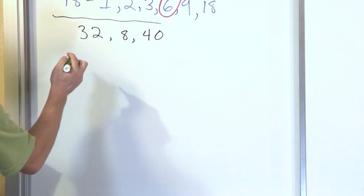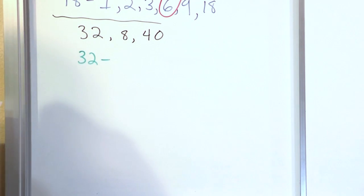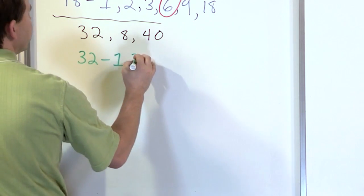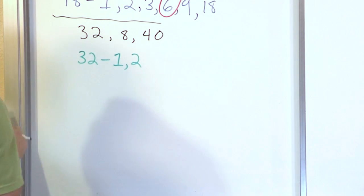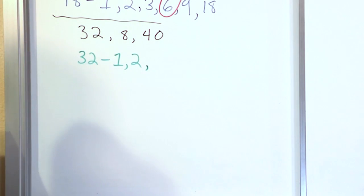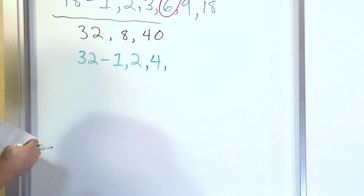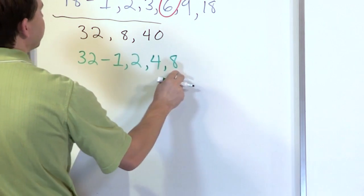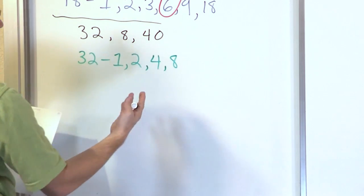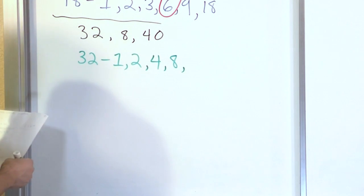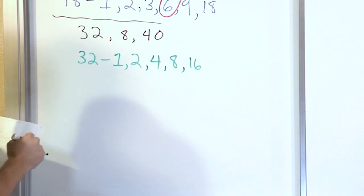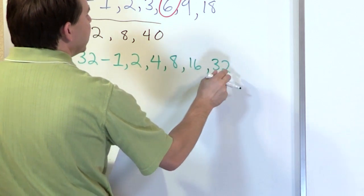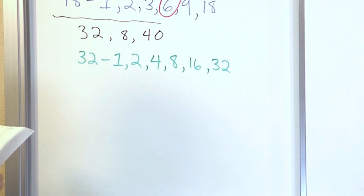Let's list the factors of the number 32. The number 1 is always a factor. The number 2 is a factor because 2 times 16 is 32 — you can also tell it's divisible by 2 because it ends in a 2. The number 3 is not a factor. But the number 4 is a factor because 4 times 8 is 32. 5, 6, and 7 are not factors. But the number 8 is a factor because 8 times 4 is 32. Going through 9 through 15, none of those work. But 16 is a factor because 16 times 2 is 32. And the only other factor is the number itself, 32.